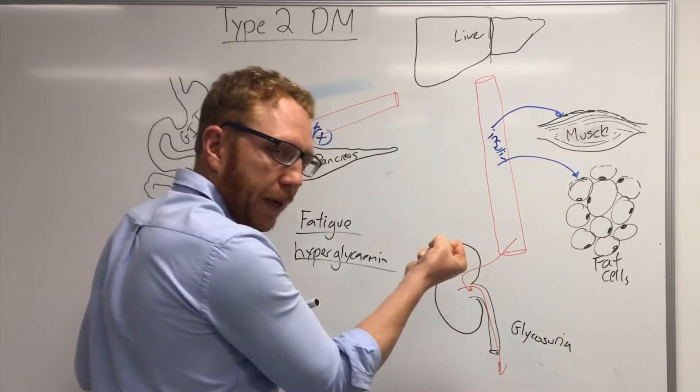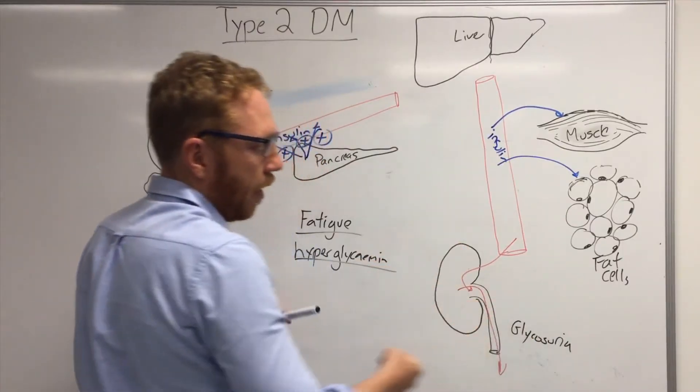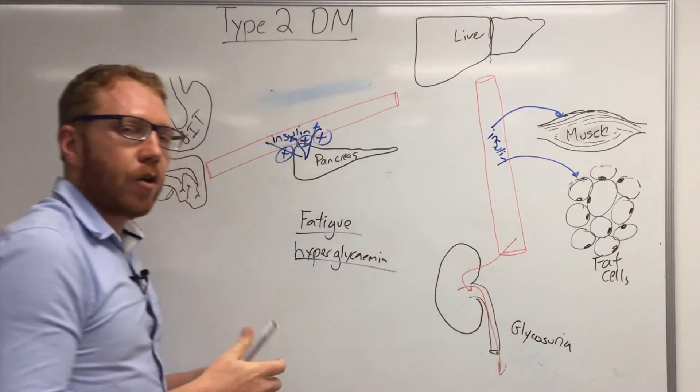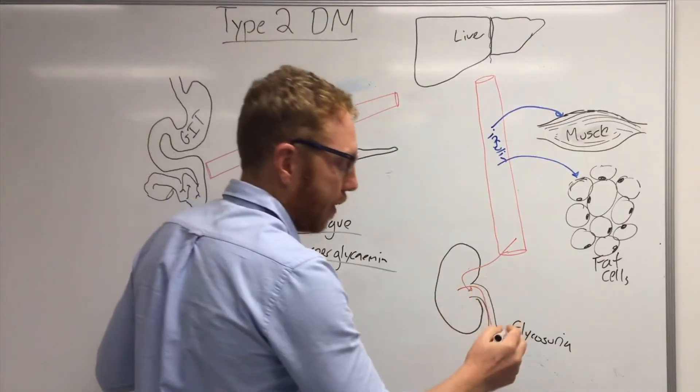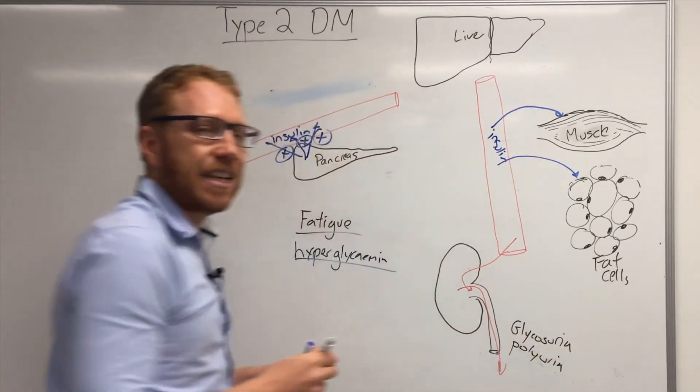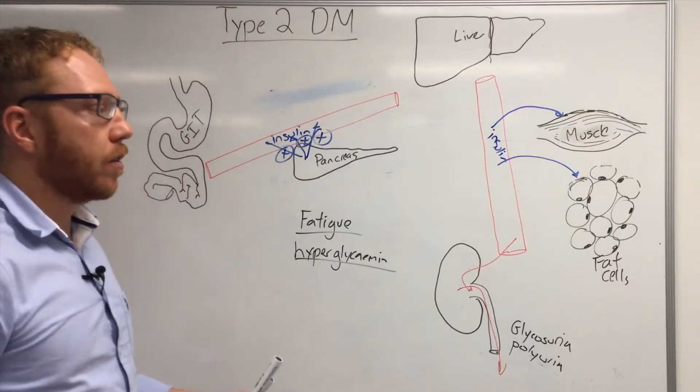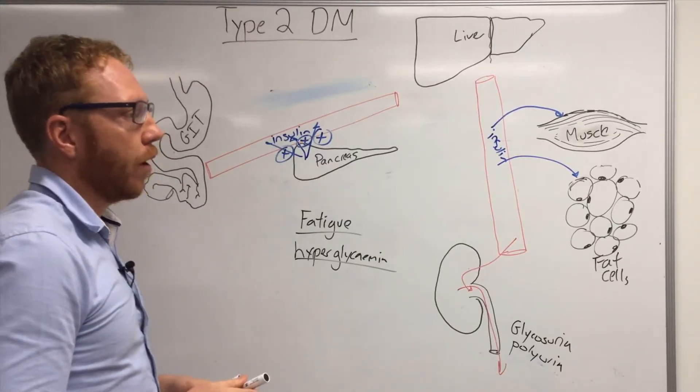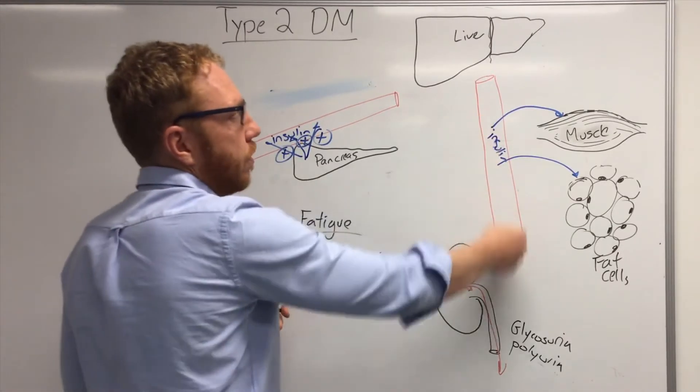Now because sugar is a big molecule, it will pull water out with it. And so the person will then develop another symptom called polyuria, which is just excessive urination, high amounts of fluid in the urine.